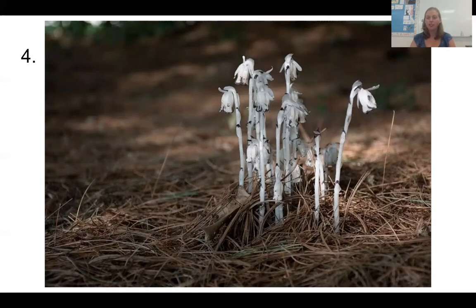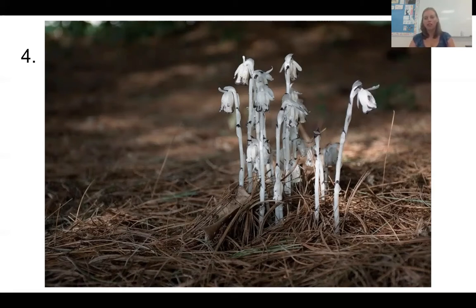The first three that you looked at were pretty easy and straightforward, but the rest of these may have gotten your thinking caps on — they're not as easy to identify. This at number four is a plant called Indian pipe. Indian pipe has been harvested in the past and used as a nerve medication. It is a parasitic plant, but it does not feed on other plants — it actually feeds on a fungus called mycorrhizae, which you also saw in this exercise and we'll talk about a little bit later.